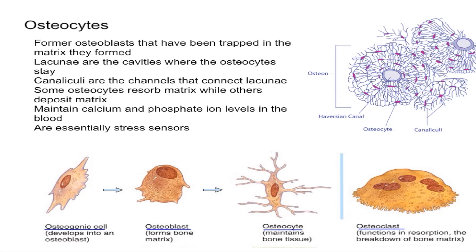The purpose of canaliculi is to allow the passage of nutrients, wastes, and chemical messengers from cell to cell. Some osteocytes will resorb bone matrix while others deposit bone matrix, but since these are no longer osteoblasts they are not as active and have essentially slowed down.